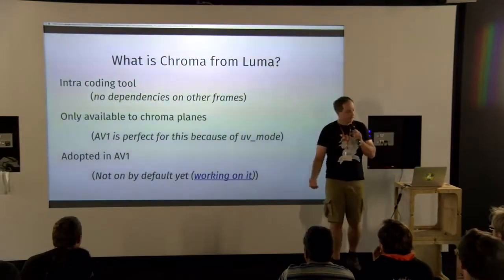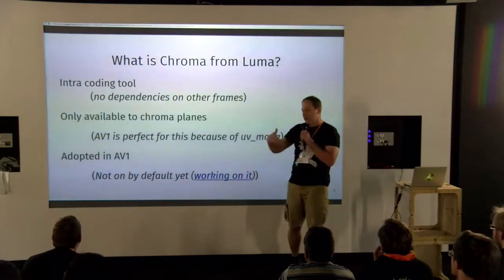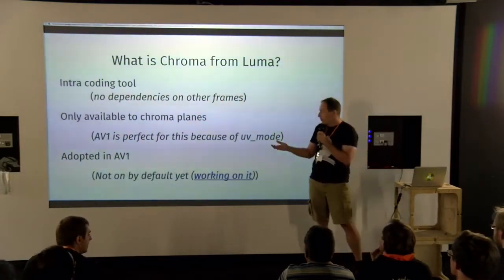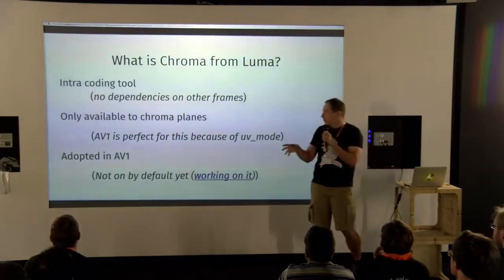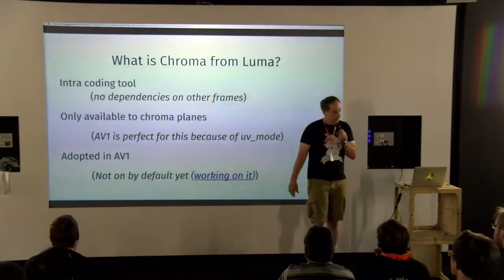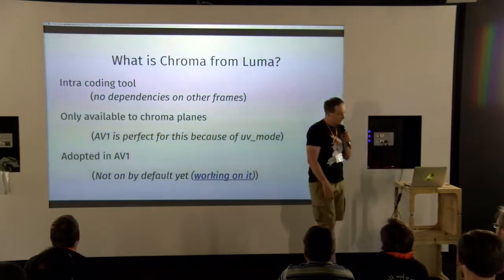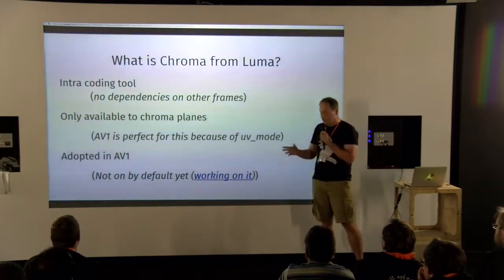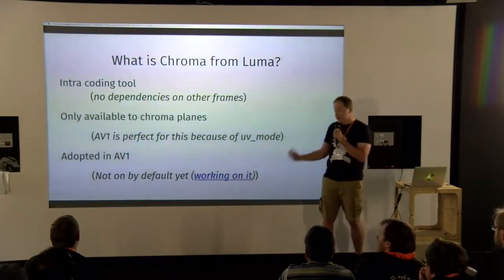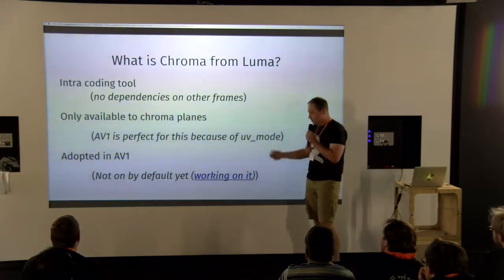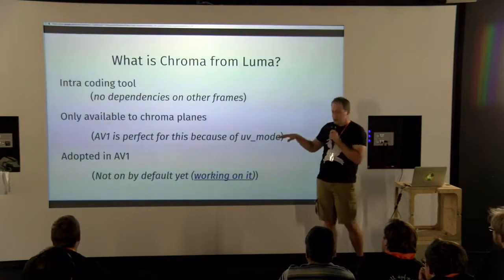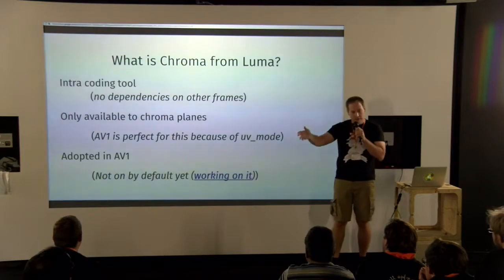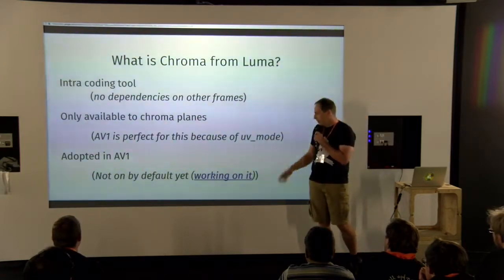So what is Chroma from Luma? It's an intracoding tool — a coding tool that has no dependencies on previously reconstructed frames. It's a particular variant because it's only available for chroma planes. AV1 was perfect for this because it has a UV mode, meaning it has its own mode for chroma planes and another mode for luma intra-blocks, so we can fit CFL right in there.